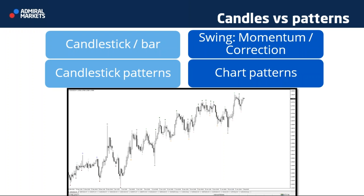When looking at candles I see building blocks that make part of a larger structure in the market. One single candle is the most basic unit — it could be a bar too. When we start to connect those candlesticks we get candlestick patterns: one, two, or three candles forming a bullish reversal, continuation, or bearish pattern. Beyond that, candles make up swings — swing highs and swing lows — that could be with momentum or corrective.